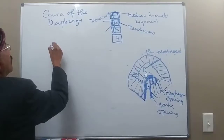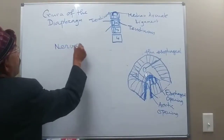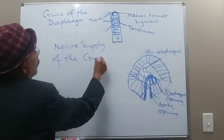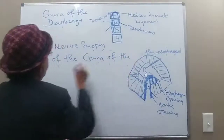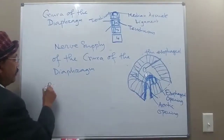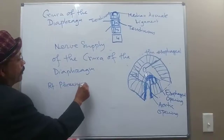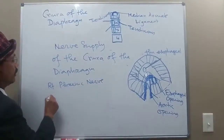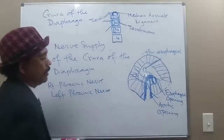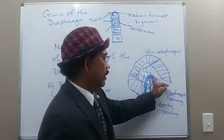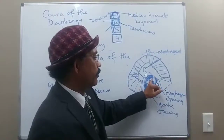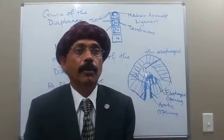What is the nerve supply of the crura of the diaphragm? The right crus receives the right phrenic nerve, and the left crus receives the left phrenic nerve. In the esophageal hiatus area, the left part receives innervation from the left phrenic nerve and the right part from the right phrenic nerve.